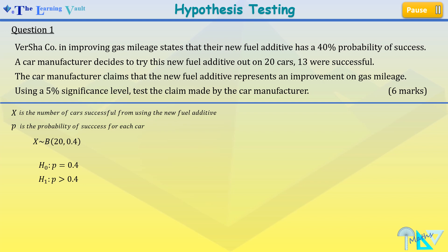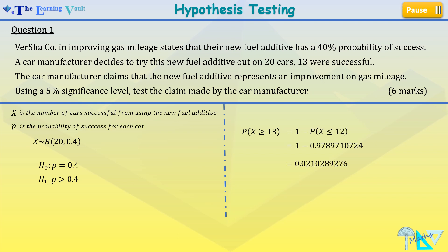Now we assume the null hypothesis is true and we carry out the probability of 13 or more successful outcomes. Using our calculator we work this out and get 0.0210289276.